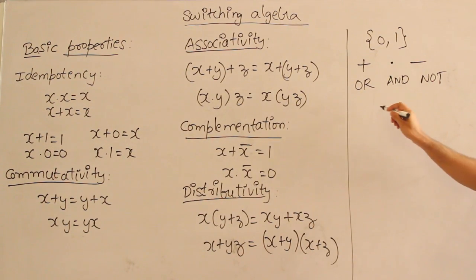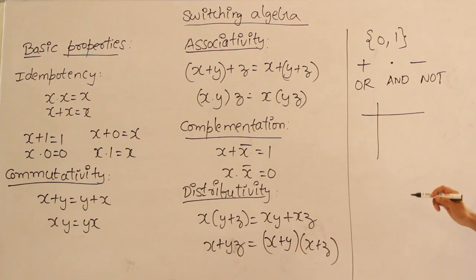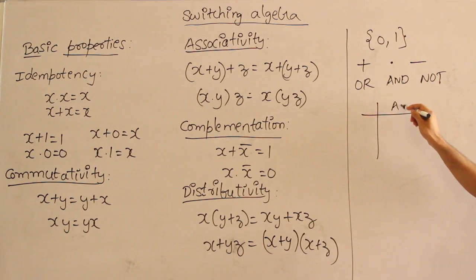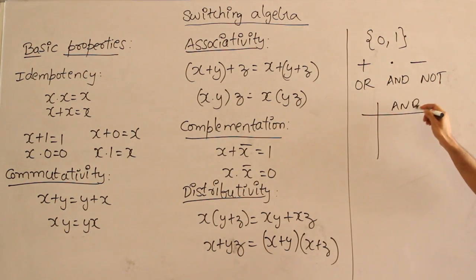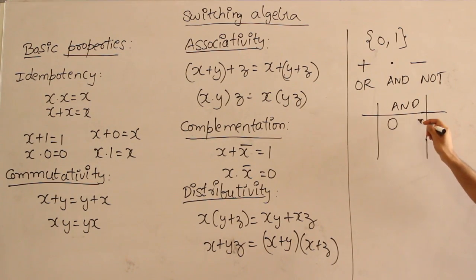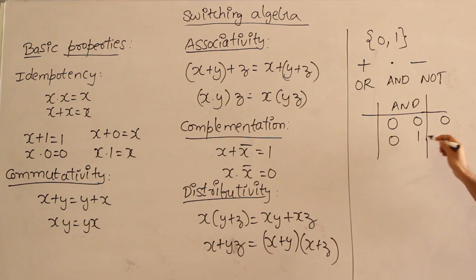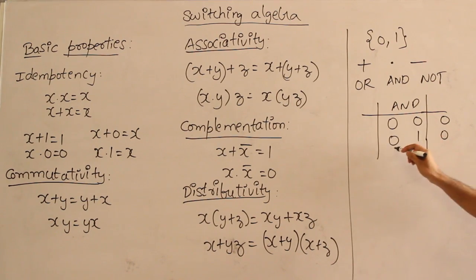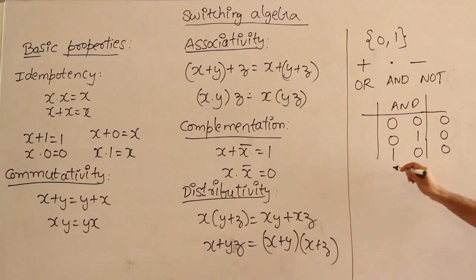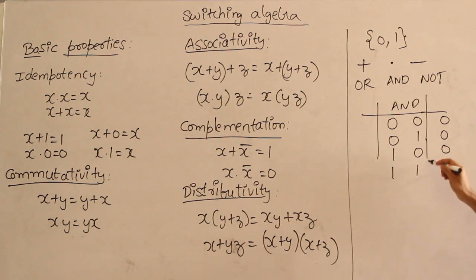You must be knowing all this, but let me go through it. AND operation: 0 AND 0 is 0; 0 AND 1 is 0; 1 AND 0 is 0; 1 AND 1 is 1.